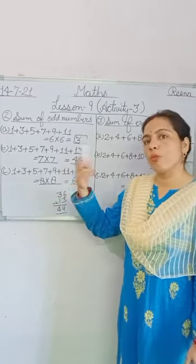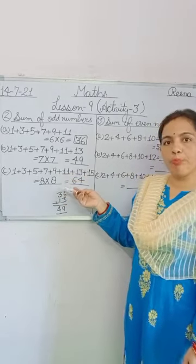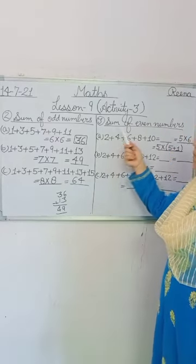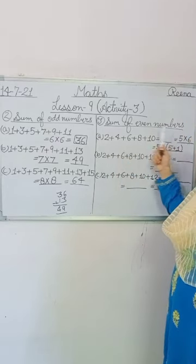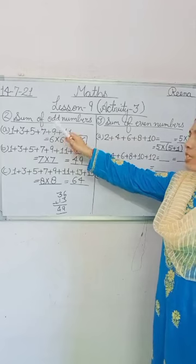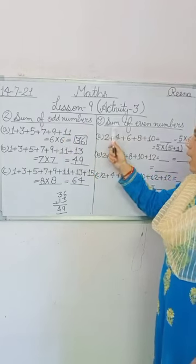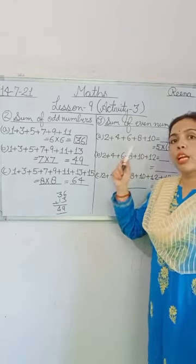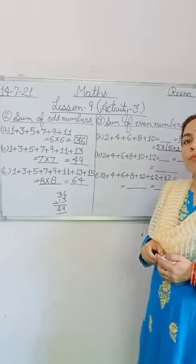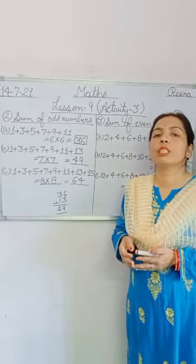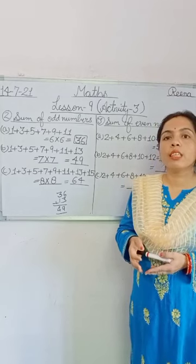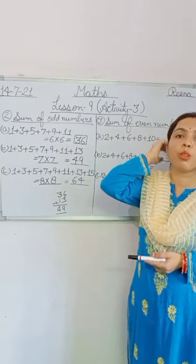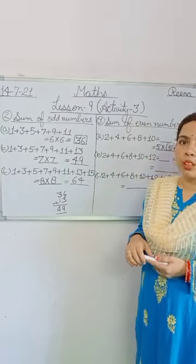Now Part D, you solve by yourself with the help of the pattern. In question number 3, you have been given the sum of even numbers. In question number 2 you had sum of odd numbers, and in question number 3 you have sum of even numbers. Now tell me, what are even numbers? The numbers which are divisible by 2.